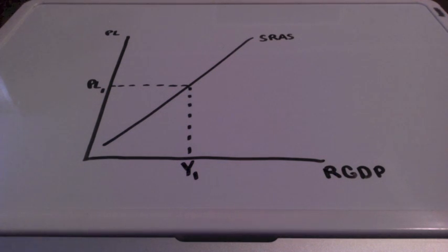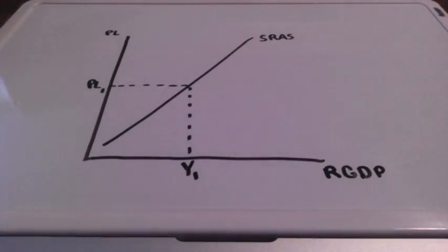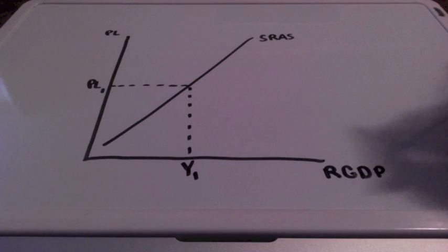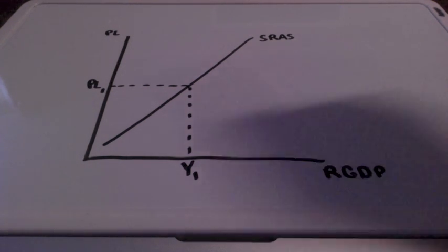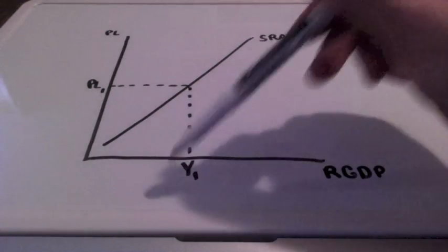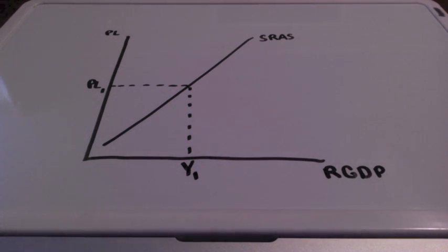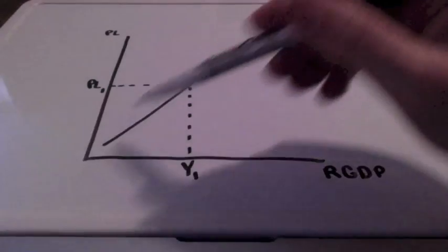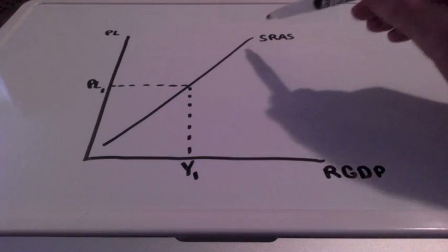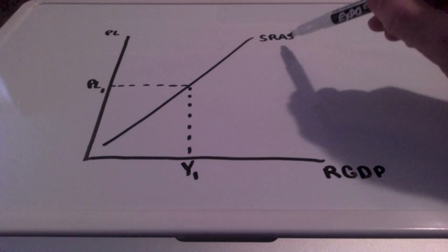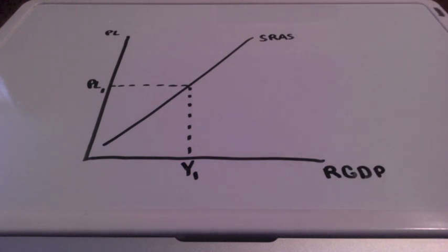In this lesson we are going to discuss the aggregate supply curve. We have price levels on the vertical axis and real GDP on the horizontal axis. PL1 and Y1 represent our starting points on an upward sloping short run aggregate supply curve — that is what SRAS stands for.